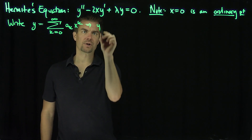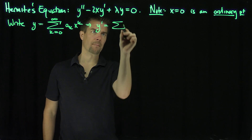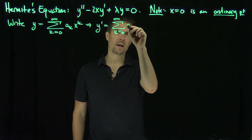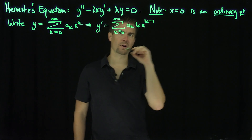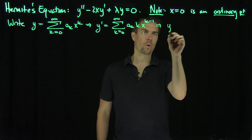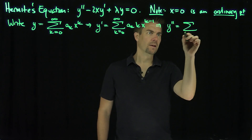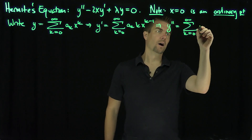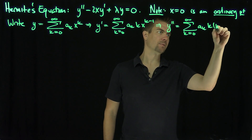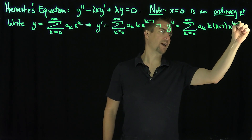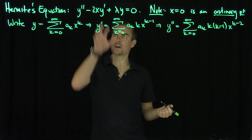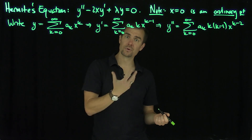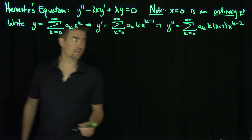Then y prime is the sum from k equals 0 to infinity of a_k k x to the k minus 1. And y double prime is equal to the sum from k equals 2 to infinity of a_k times k times k minus 1, x to the k minus 2. That's the first step in solving a differential equation with non-constant coefficients using the ordinary point method.